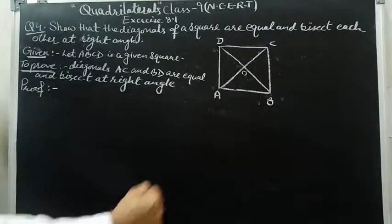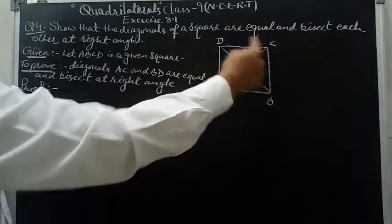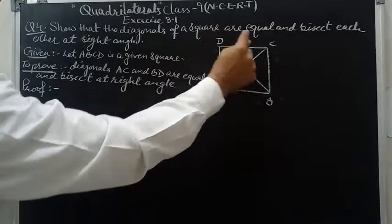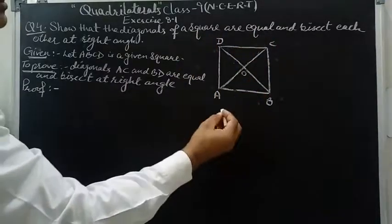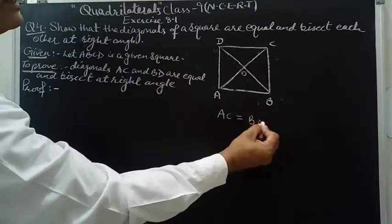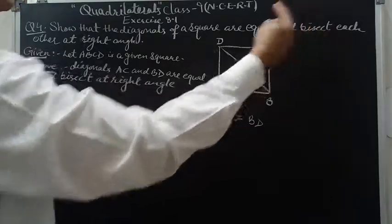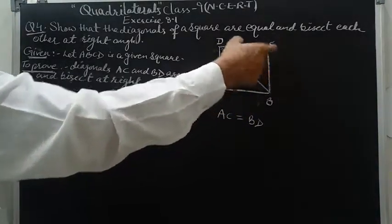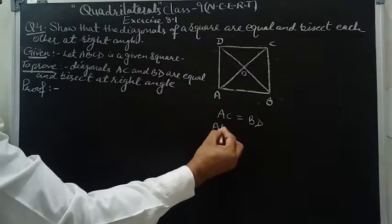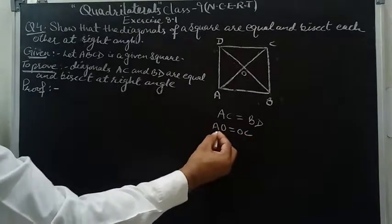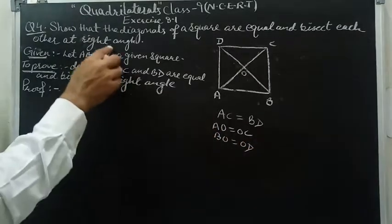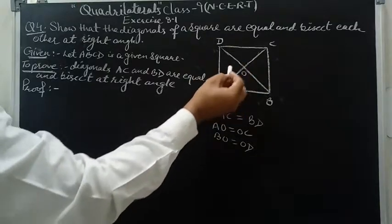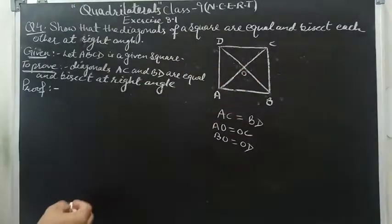In this question, a square ABCD is given. We have to prove three things: first, the diagonals are equal, meaning diagonal AC equals diagonal BD. Second, the diagonals bisect each other, meaning AO equals OC and BO equals OD. Third, the diagonals bisect at right angles, meaning angles AOB, COB, COD, and BOA all equal 90 degrees.